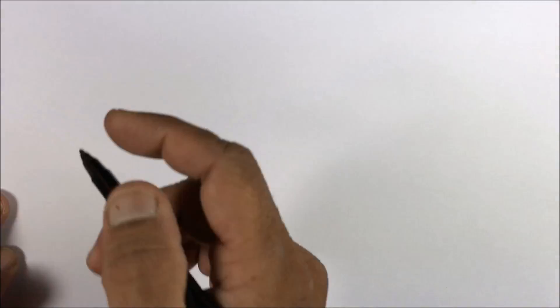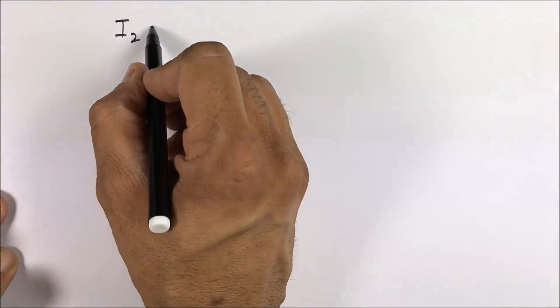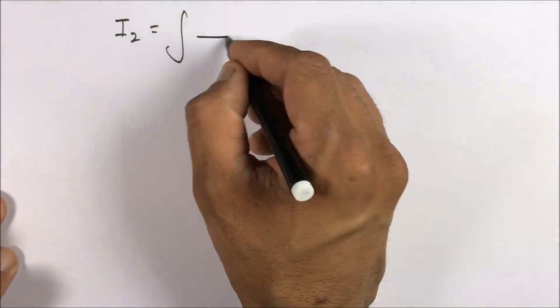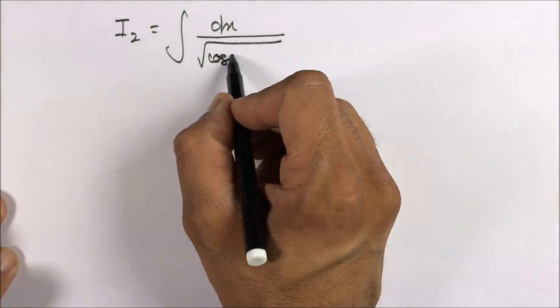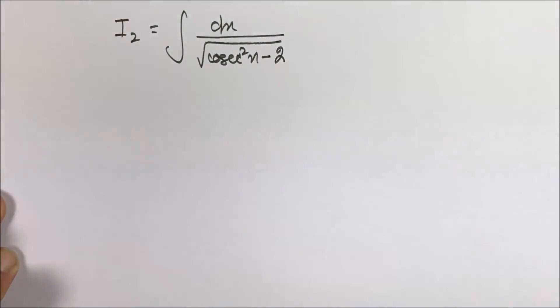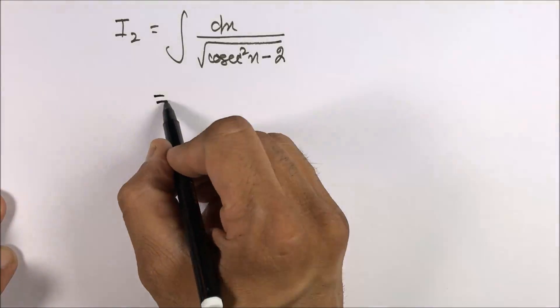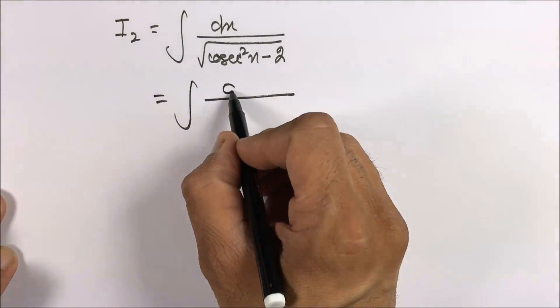Now coming on to I2. If you remember, I2 is dx upon cosecant square x minus 2. This is a trick question. If now you write 1 plus cot square x, this thing won't work because you do not have cosecant square x derivative in the numerator. So what you do is use a trick.